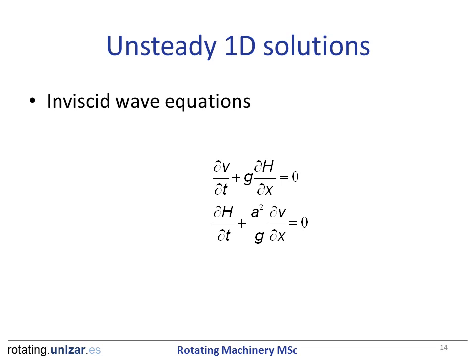If more detail is required — for instance, the behavior of the pressure and velocity along the pipe as a function of time — more sophisticated models are needed, such as the inviscid transient wave equations.